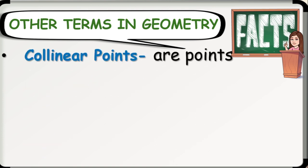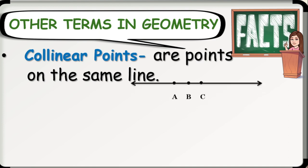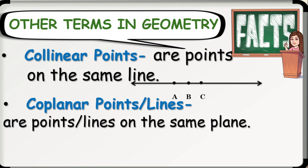Let's have collinear points. These are points on the same line. Here is an example. Points A, B, and C are on the same line. Next, we have coplanar points or lines. These are points or lines that are on the same plane. Here is an example. We can say here that on plane A, line PQ and line RS are coplanar lines.